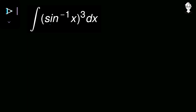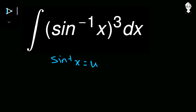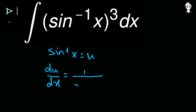We will start the process by the substitution method. We will consider sin inverse x as u. So, let sin inverse x be equal to u. Taking the derivative on both sides, du/dx equals the derivative of sin inverse x, and there is a direct formula: the derivative of sin inverse x equals 1 over the square root of 1 minus x squared.